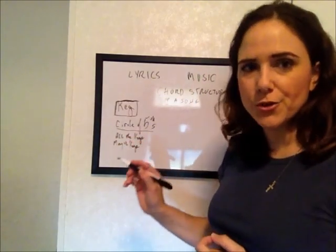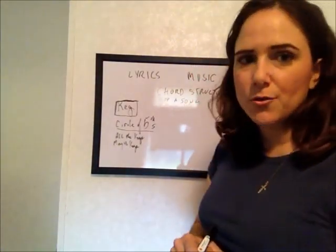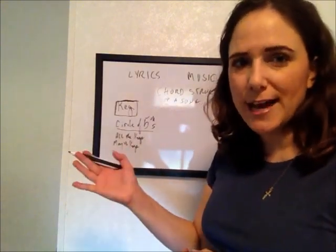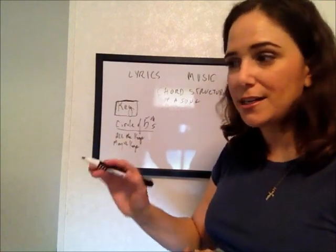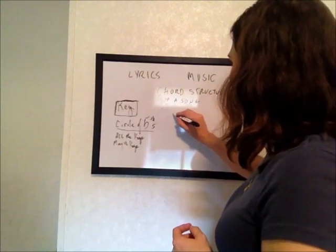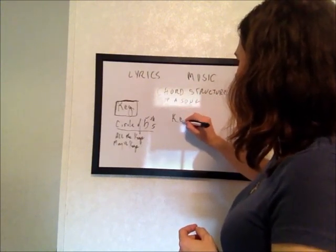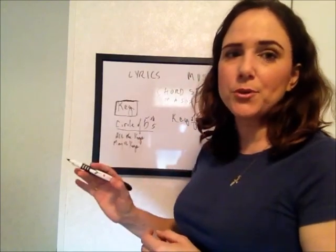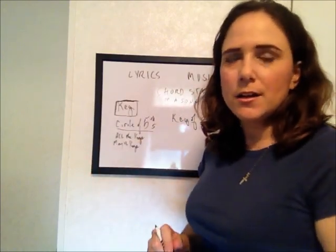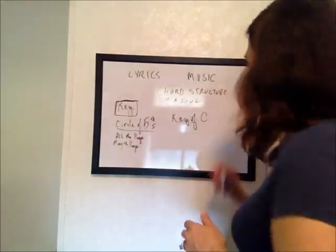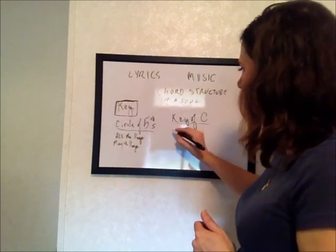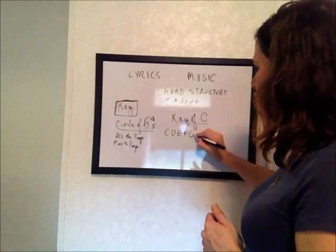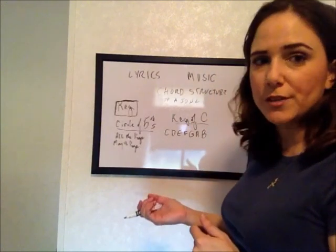We're going to start with the key of C, because the key of C has no sharps and no flats — which means if you're playing on the piano, you don't hit any of the black keys. You could actually end up writing a song today using these simple directions. The key of C is C, D, E, F, G, A, B — no sharps, no flats within the key of C.